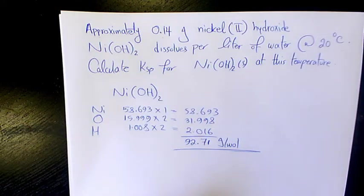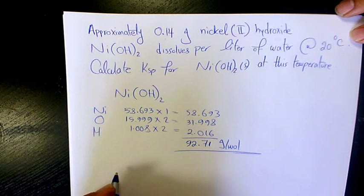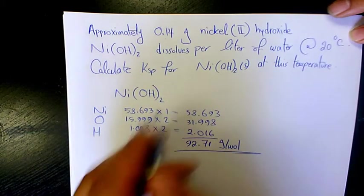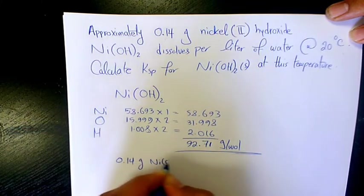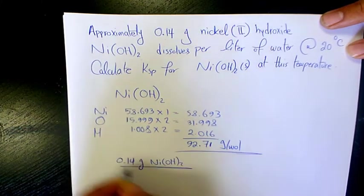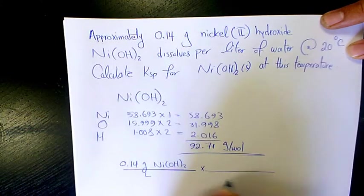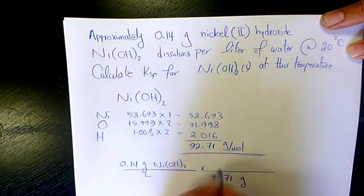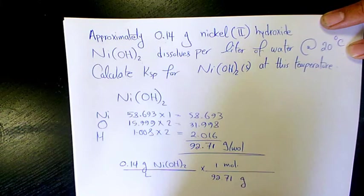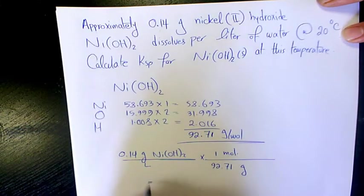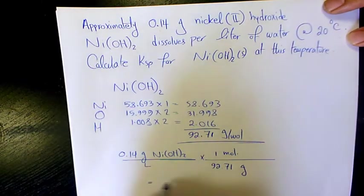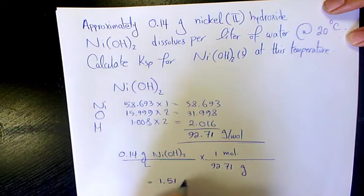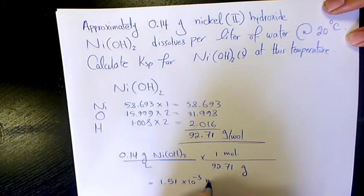So we have 0.14 grams of nickel hydroxide per liter, and 92.71 grams is equivalent to 1 mole. That's going to be 0.14 divided by 92.71, which equals 1.51 times 10 to the power of negative 3 moles per liter.